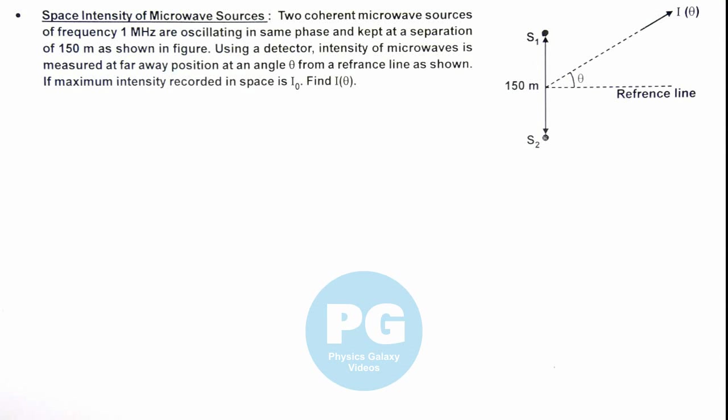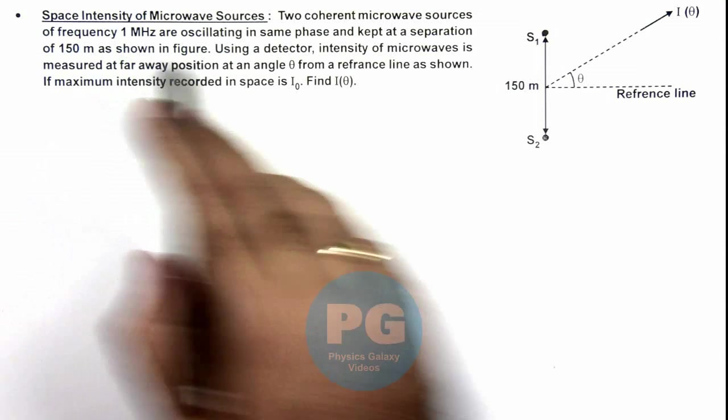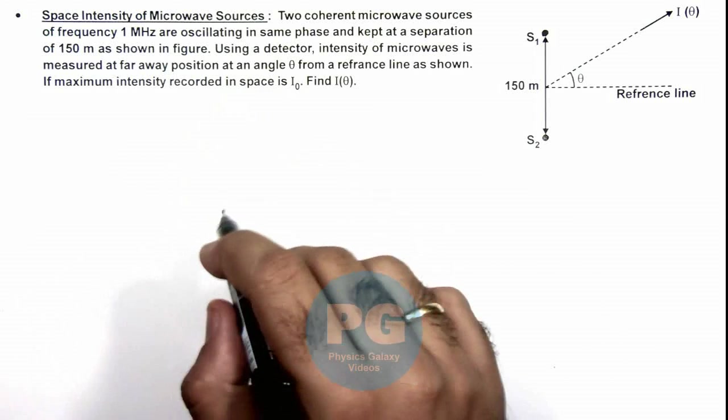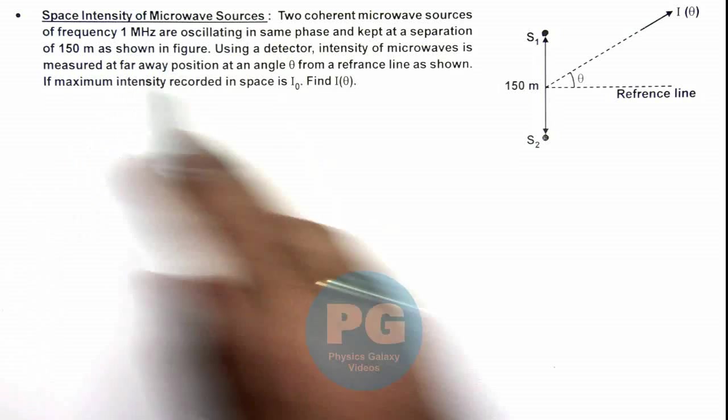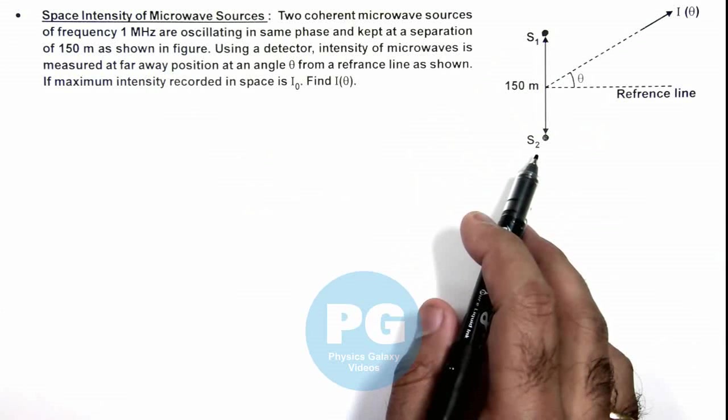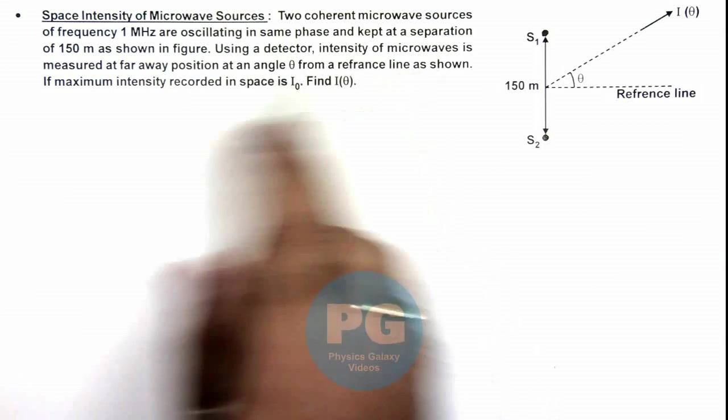In this illustration we'll analyze the space intensity of microwave sources. If we are given two coherent microwave sources of frequency 1 megahertz oscillating in the same phase and kept at a separation of 150 meters.